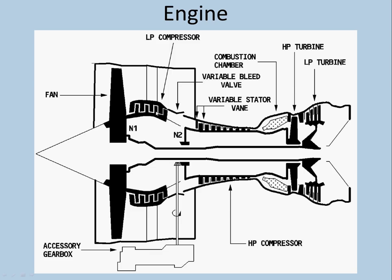The LP compressor has four stages, and the LP turbine also has four stages. The HP compressor has nine stages and the HP turbine is a single stage. There are two assemblies: a low pressure assembly — with those stages, the shaft and the turbine — and a high pressure assembly, which similarly has a shaft, turbine, and the compressor itself.